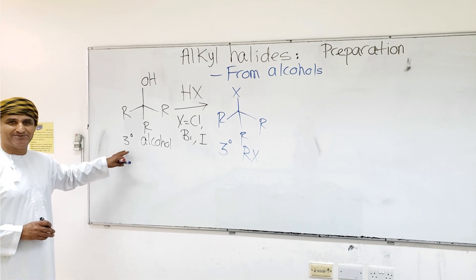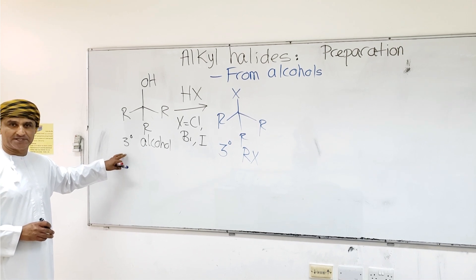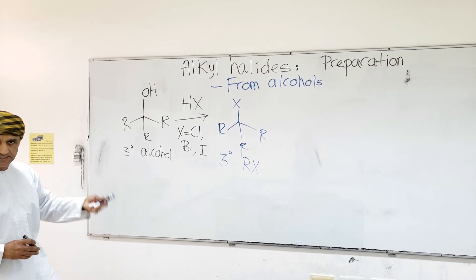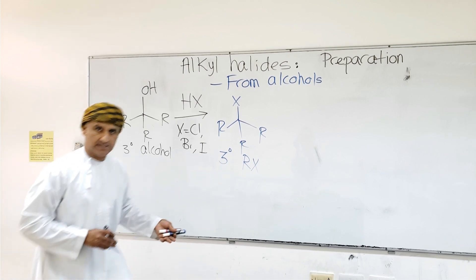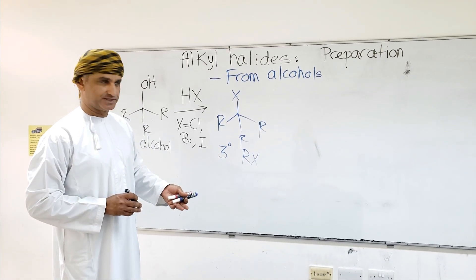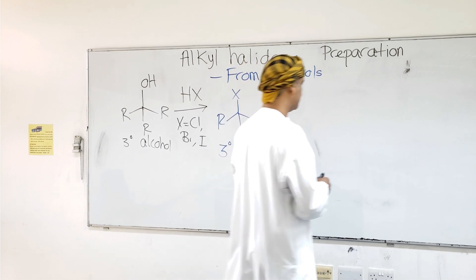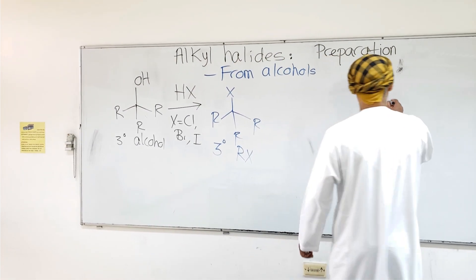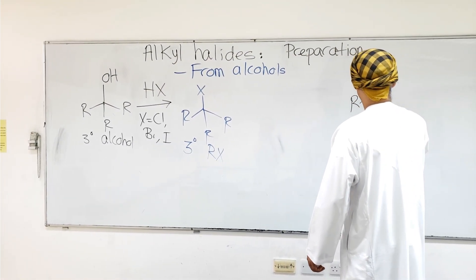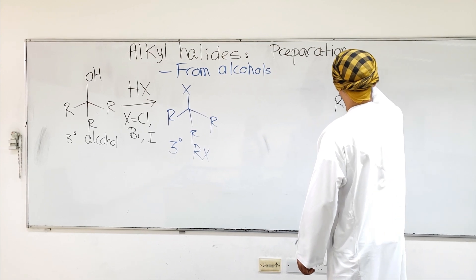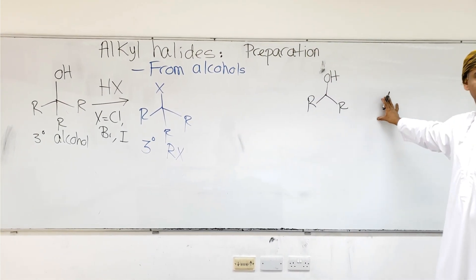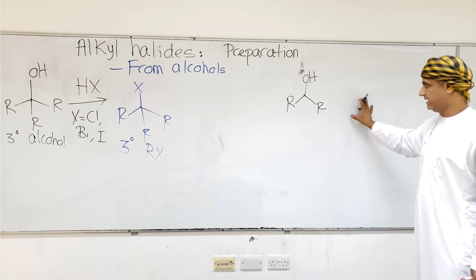As we said earlier, alcohols are not only of tertiary type. Secondary alcohols and primary alcohols are also possible. This is the structure of a secondary alcohol, and secondary alcohols can also be converted into the corresponding alkyl halides.